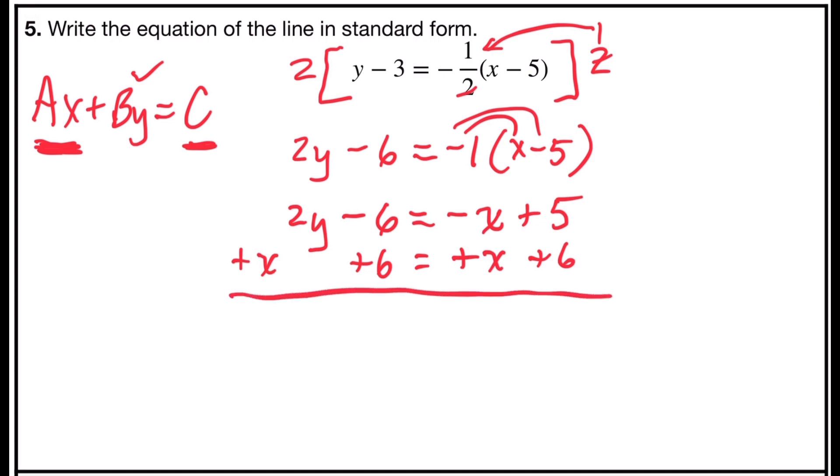x plus 2y, negative 6 plus 6 is 0. So I have x plus 2y on the left side, negative x plus x on the right side is 0, and 5 plus 6 is 11.